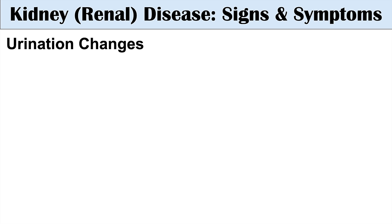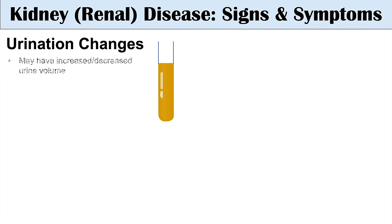The first one I want to talk about is urination changes. If there's an issue with the kidneys, we can have urination changes. Sometimes we may see increased or decreased urine volume. In some kidney conditions, we can see increased urination, so patients may experience more frequent trips to the washroom. In more advanced stages of kidney disease, we often see decreased urination or decreased urine volume.